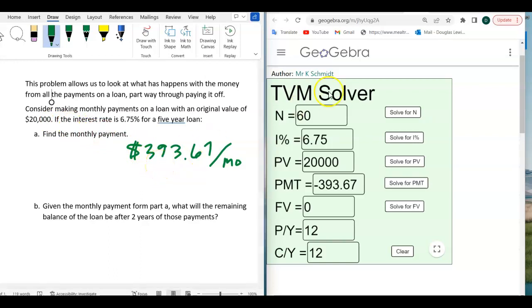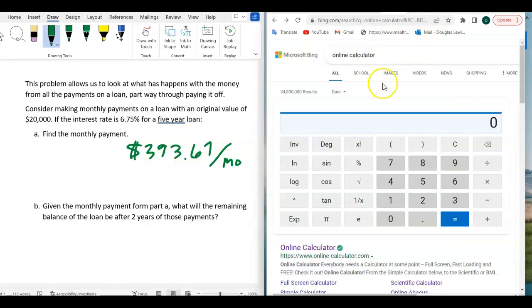If we just take $20,000, I'm going to go to an online calculator. If we take that $20,000, and we multiply it by 6.7%, which is 0.0675, and you divide it by 12. And the reason you divide by 12 is, it's only one month of interest. So this would be the interest rate and the amount of interest for one month.